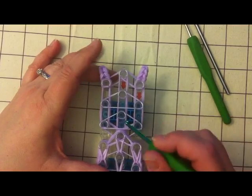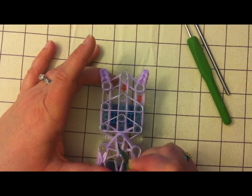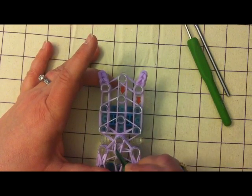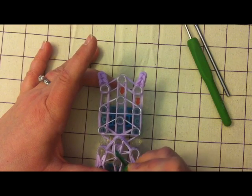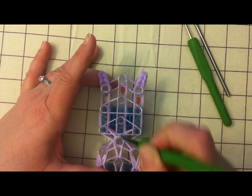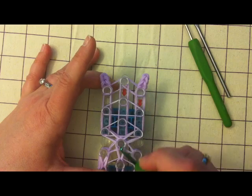So now we're going to loom up the head and to do that, we're going to start this side and we're going to grab these two bands that are on the top. Two bands on the top and loom them to the corresponding peg and on the other side to the corresponding peg.